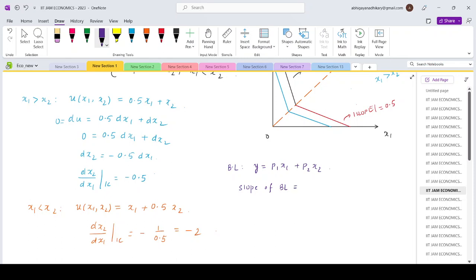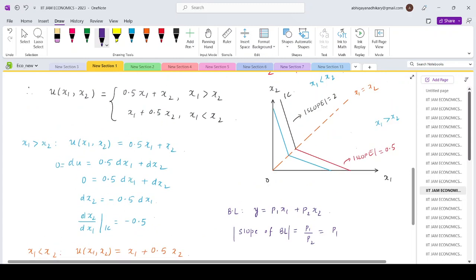It is minus p₁ by p₂, so the absolute slope is simply p₁ by p₂. Given p₂ equals 1, so in this case it is only p₁.